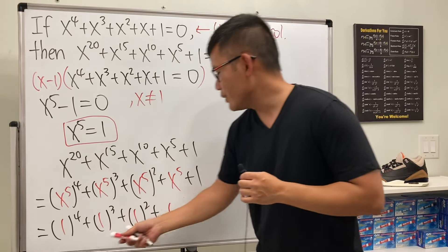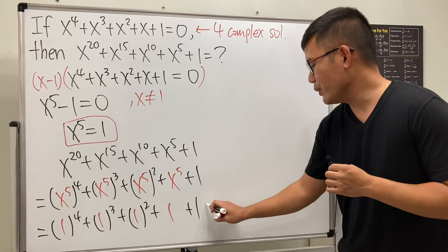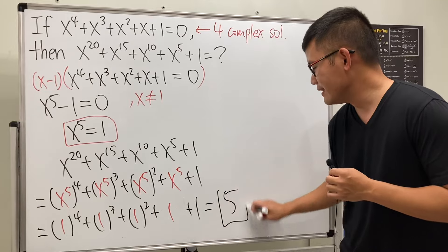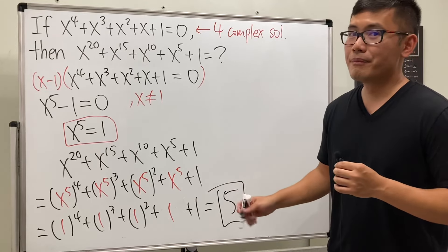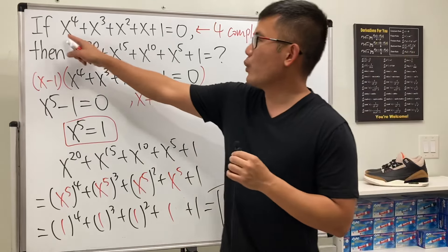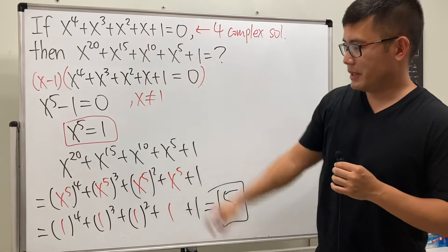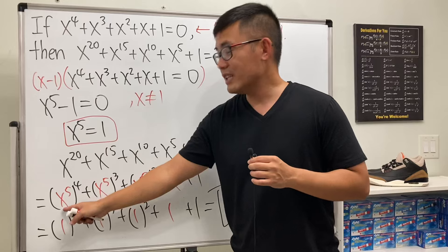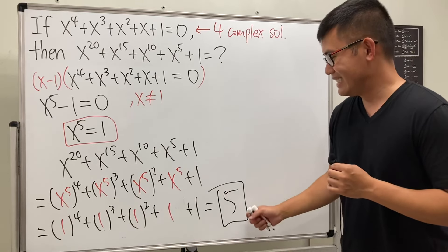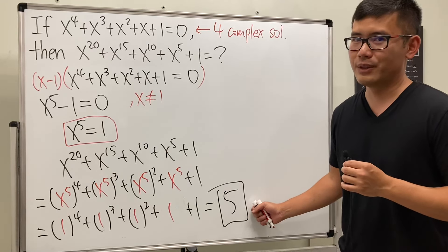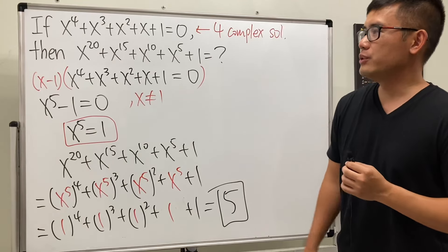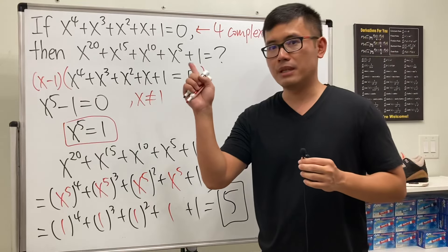But you know, 1 + 1 + 1 + 1 + 1—the answer equals 5. Five. But again, do not plug in one for x here. x = 1 does not work for the original, but it works here because x^5 = 1. That's the answer right here. Hope you liked this. If you want to see more interesting math equations, check out my playlist over there.